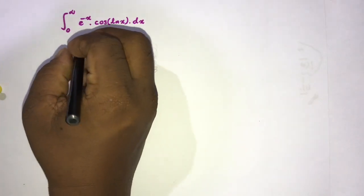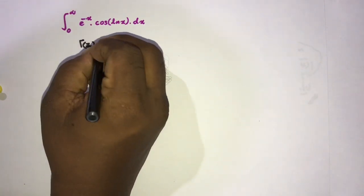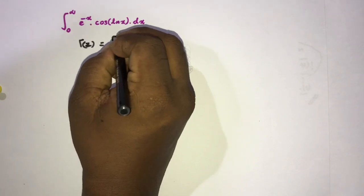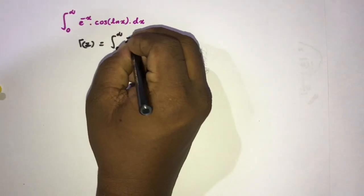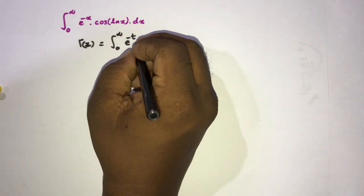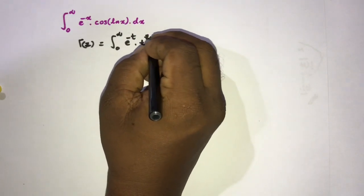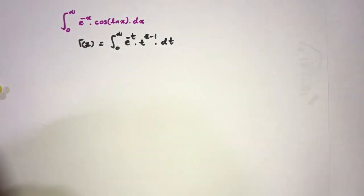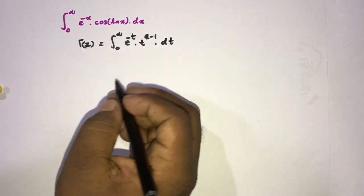First, I am going to begin with the gamma function. The definition of the gamma function: gamma of c is equal to the integral from zero to infinity of e to the minus t times t to the c minus 1 dt.